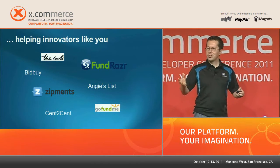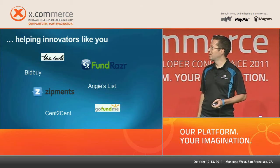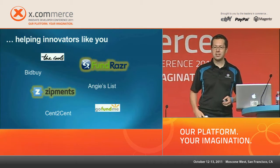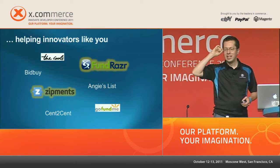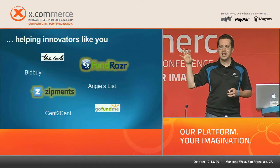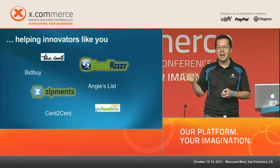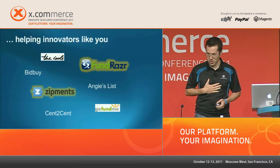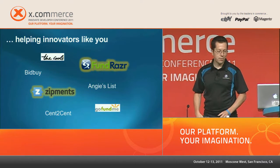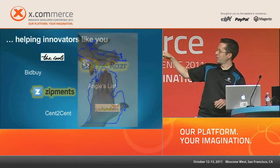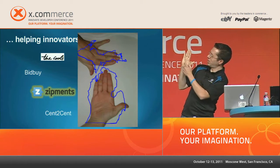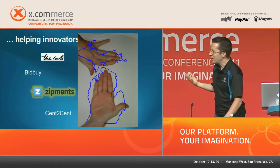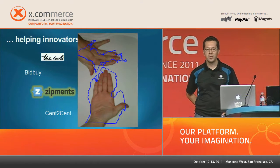We have a couple of companies here with us today. The first — I'd like to introduce the CEO of a company called Zipments. One thing I like about these two companies is that even though they're very entrepreneurial and seem like Silicon Valley companies, they're in fact not. Zipments is based in Grand Rapids, Michigan. Without further ado, let's welcome Garrick Pohl, who's the CEO and president of Zipments.